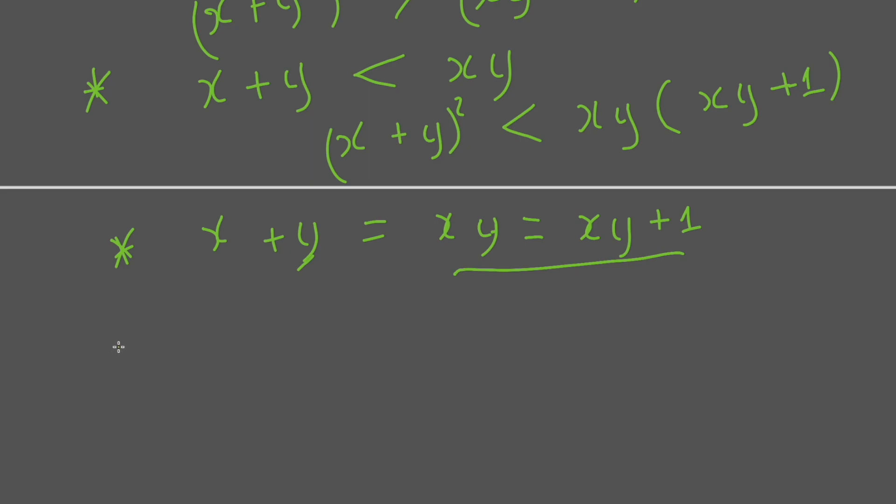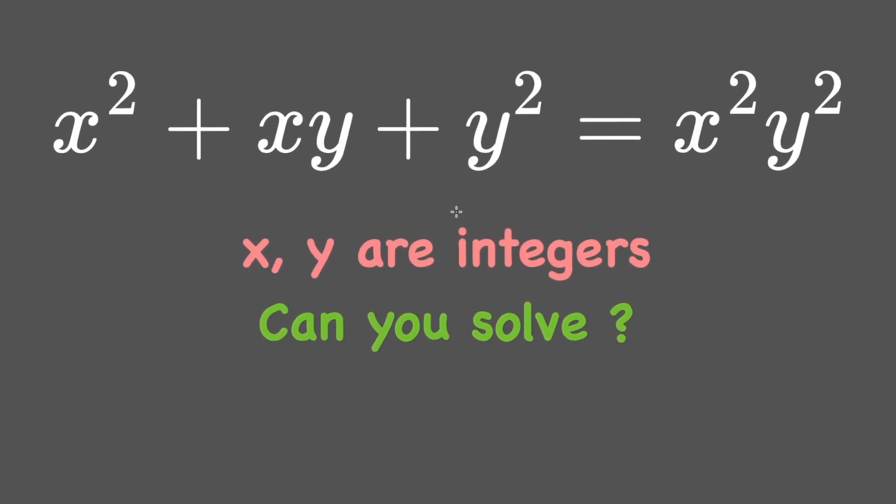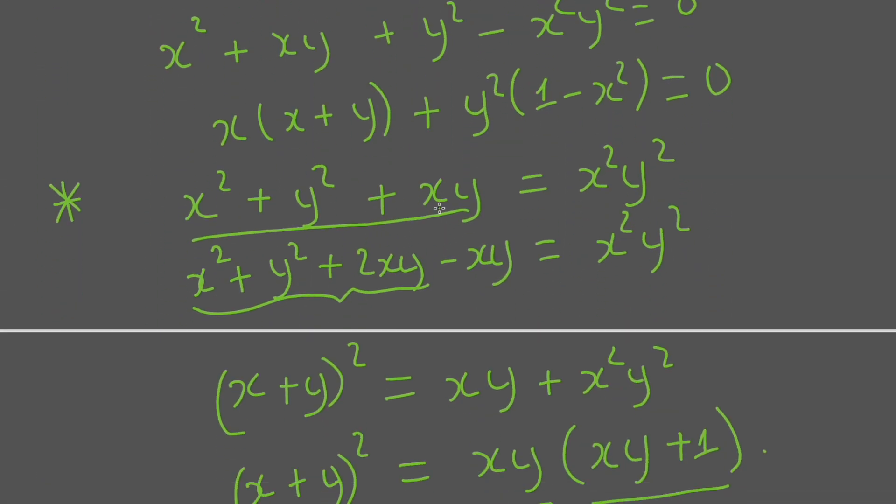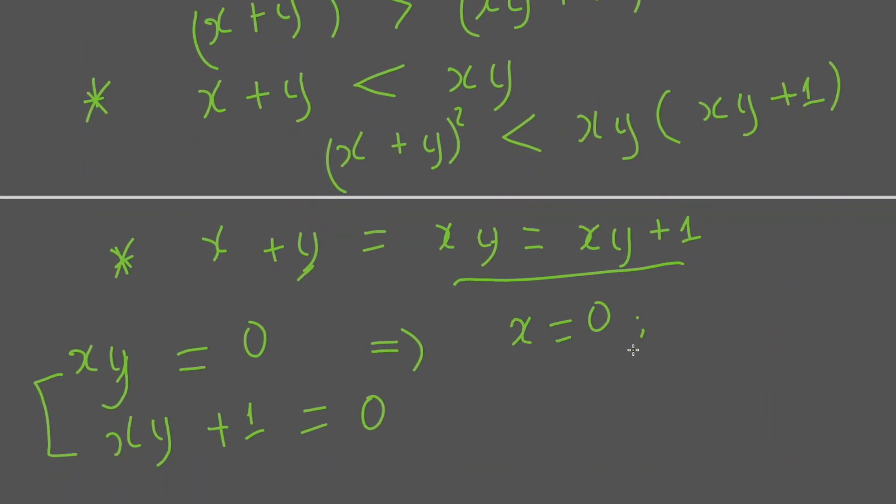So we have the last case: xy has to equal 0 or (xy + 1) equals 0. If the first case happens, then we replace it into the first equation, so x = 0 and y = 0.